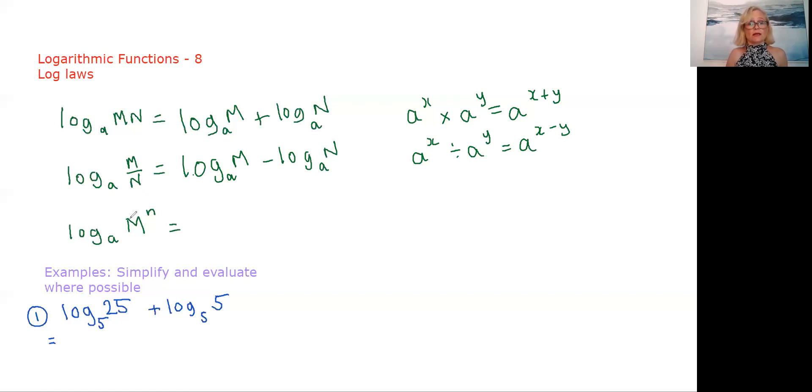This one here is the log of a power, which is really like an extension of this first one here, and the equivalent here is like this when you multiply your indices. If you've got a power of a power, you're going to multiply by the index. So if you have a power there, you can actually bring that right out the front of your logarithm and multiply it.